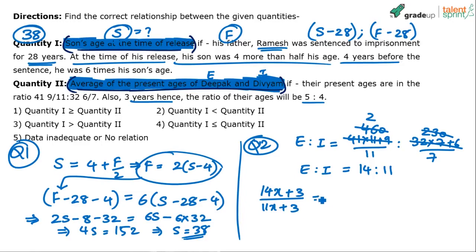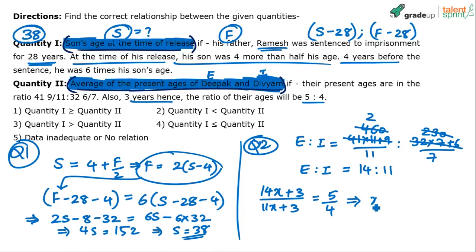After 3 years the ages will be (14x + 3) and (11x + 3), and their ratio equals 5 to 4. Since options are not given, exact calculation is needed. Cross-multiplying: 56x + 12 = 55x + 15, giving x = 3.